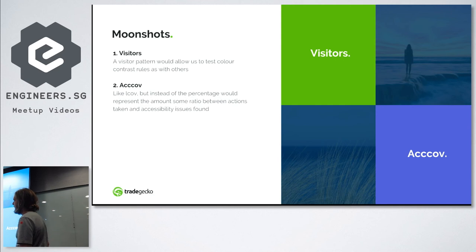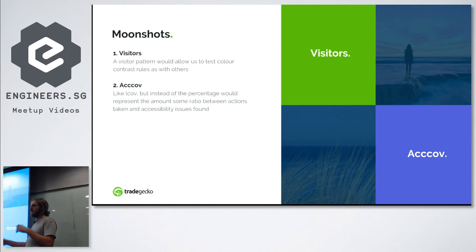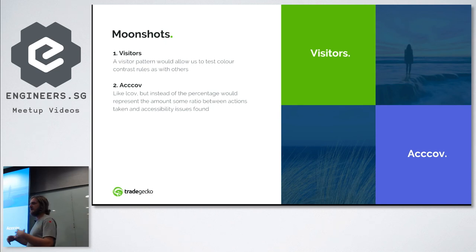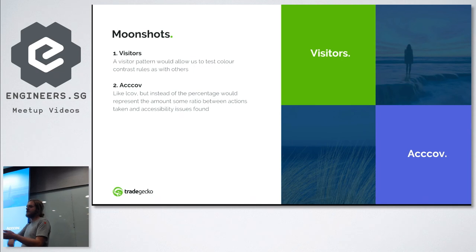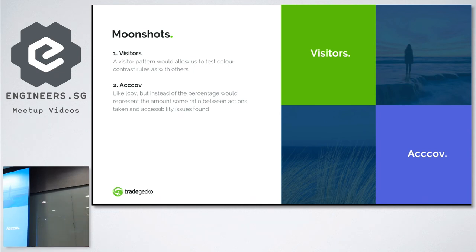Even more extreme: similar to Istanbul's line coverage showing how much code is tested, we could build accessibility coverage reports. You could then use these on your CI pipeline to ensure your percentage of accessibility coverage doesn't decrease — so you at least maintain the same level.